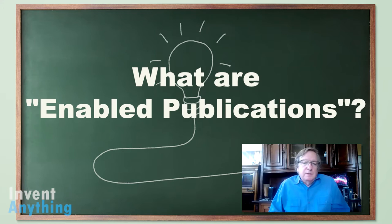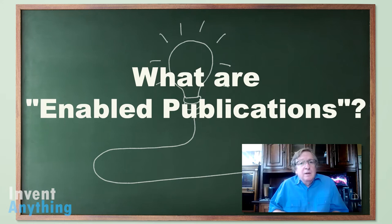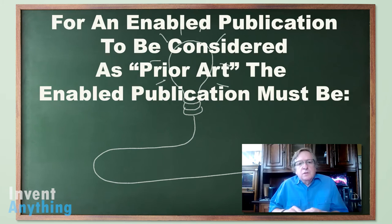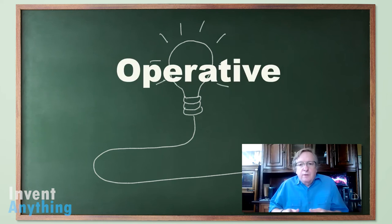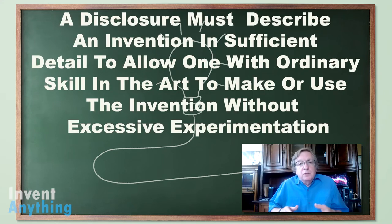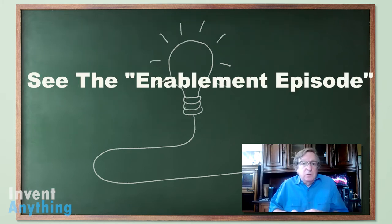What are Enabled Publications? I've given that term because prior to this, they would be called defensive publications, but I became aware that there were many offensive strategies you could use. Enabled Publications are designed so patent examiners can find them quickly and use them as a reference. In order to be considered as prior art, they have to be enabled, they have to be operative, they must be available to search, the date has to be referenceable, and the disclosure must describe an invention in enough detail so the examiner knows these things work.